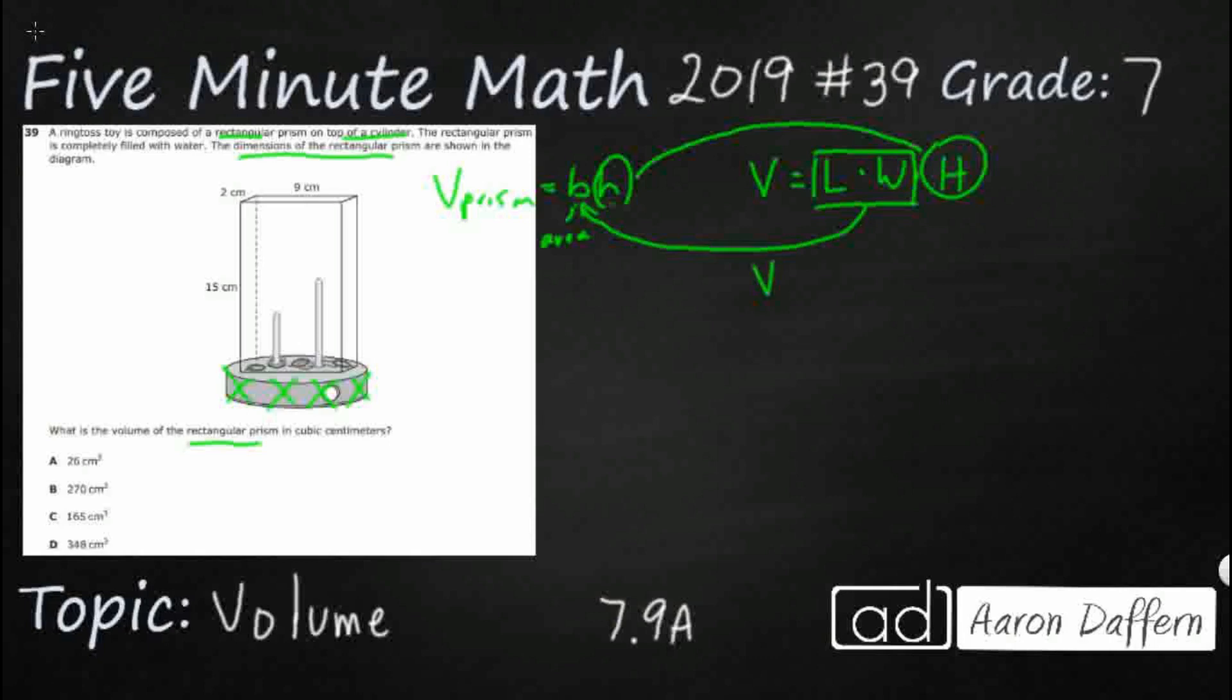If we wanted to, we could just plug in these three numbers. We can say our length times our width, so that's 2 times 9. And then we've got our height, so that's 15.